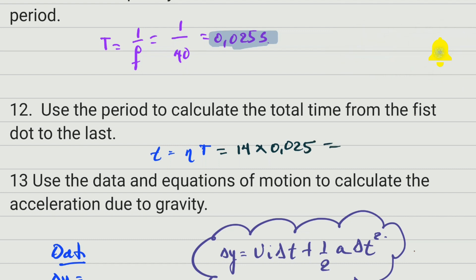We have that the time is 0.35 seconds. This time is the total time that the object took to drop from the height where we released it to the ground.